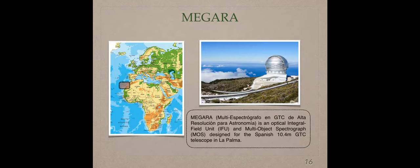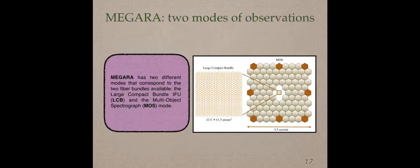This instrument, this spectrograph, is located in the Islas Canarias. In the right image, you can observe the Gran Telescopio Canarias. This instrument, Megara, is attached in this telescope. This instrument has two mode observations. The first one is a multi-object spectrograph, that is a MOS mode. This mode is useful to study deep sky, or very distant objects. The size of the field is 3.5 arc-minutes.